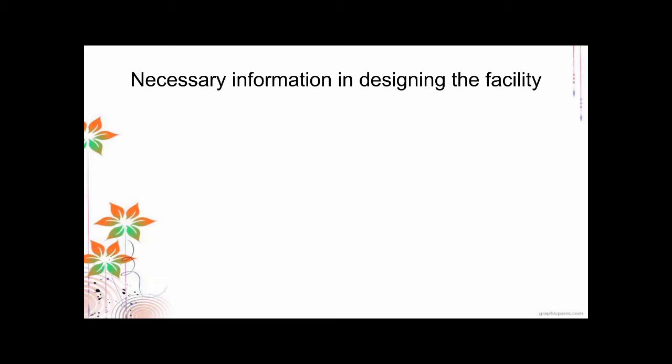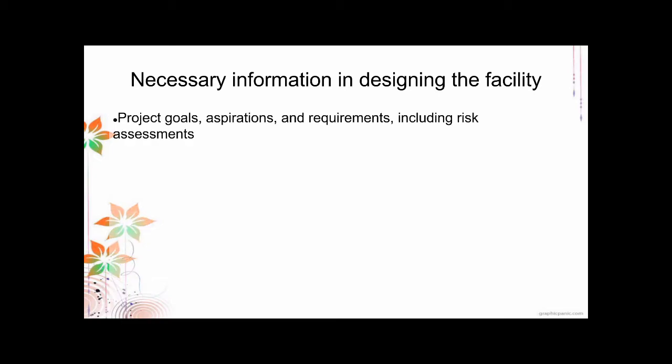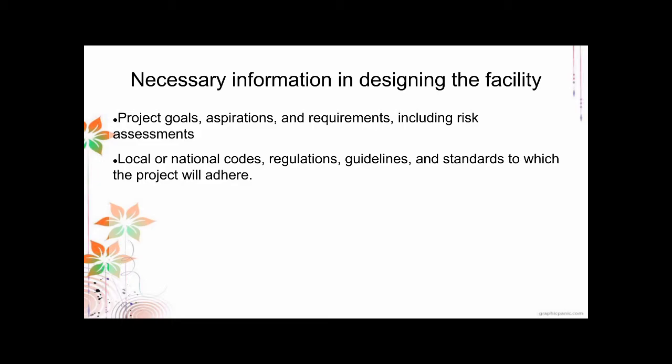What are the necessary pieces of information for designing a facility? First, the project goals — the aspirations and requirements of your facility, including a robust risk assessment. Second, the local or national codes, regulations, guidelines, and standards to which the project will adhere. You need to adhere not only to biosafety codes and standards, but also building codes and fire safety codes. If you are doing a project in an already-built facility, assess whether that facility meets the guidance required for that project.